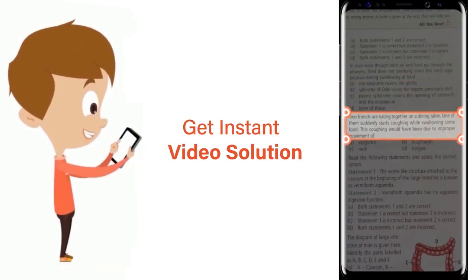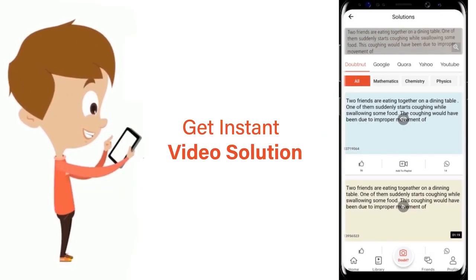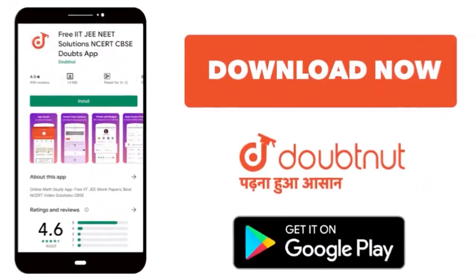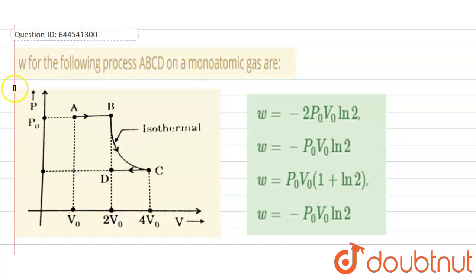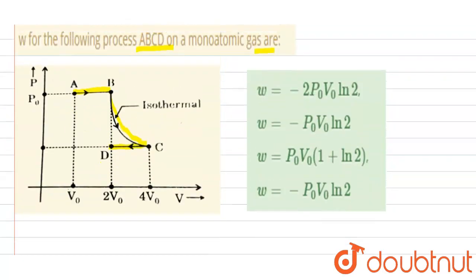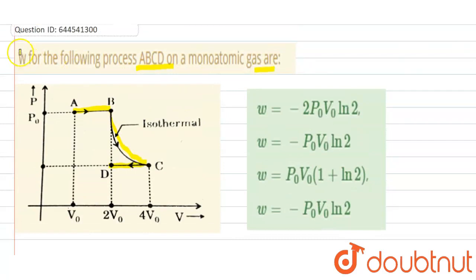Hello everyone. Here our question is: find the work done for the following process ABCD on a monoatomic gas. The curve is given and it is going from A to B, B to C, and C to D. We need to find out the total work done in the process.